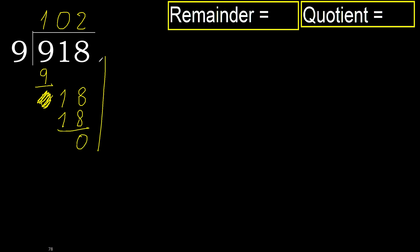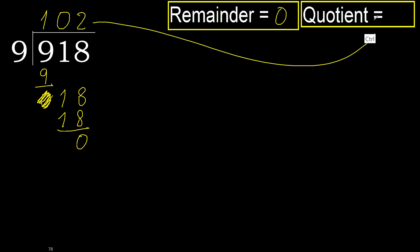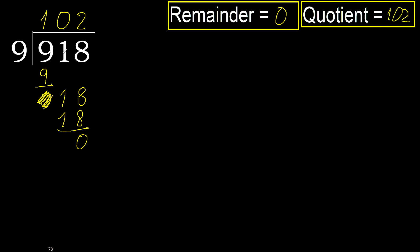Subtract. Next — there is no more number, therefore finish. 918 divided by 9 equals 102. Therefore, thank you.